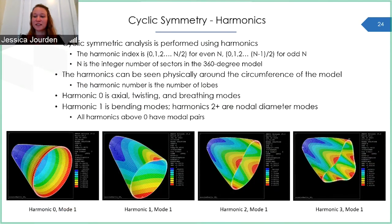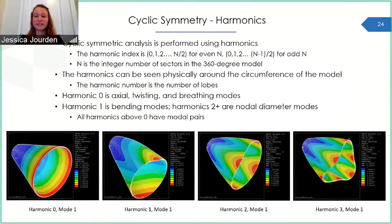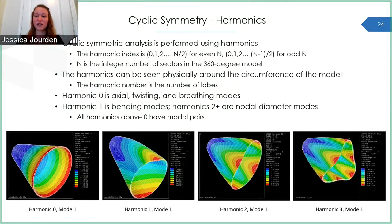The cyclic symmetry analysis is performed using harmonics, which can be seen around the circumference of the model. Harmonic zero is axial, twisting, and breathing modes. Harmonic one is bending modes. And harmonics two and above are nodal diameter modes. The first modes of harmonics zero through three of the truth model are shown here. You can see by looking at the nozzle edge that the harmonic number matches the number of lobes.